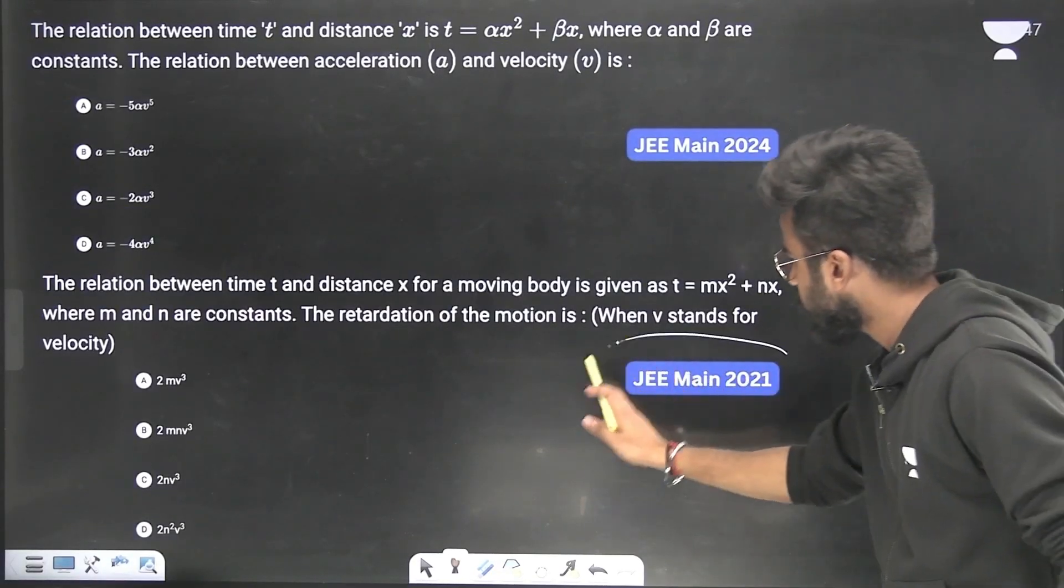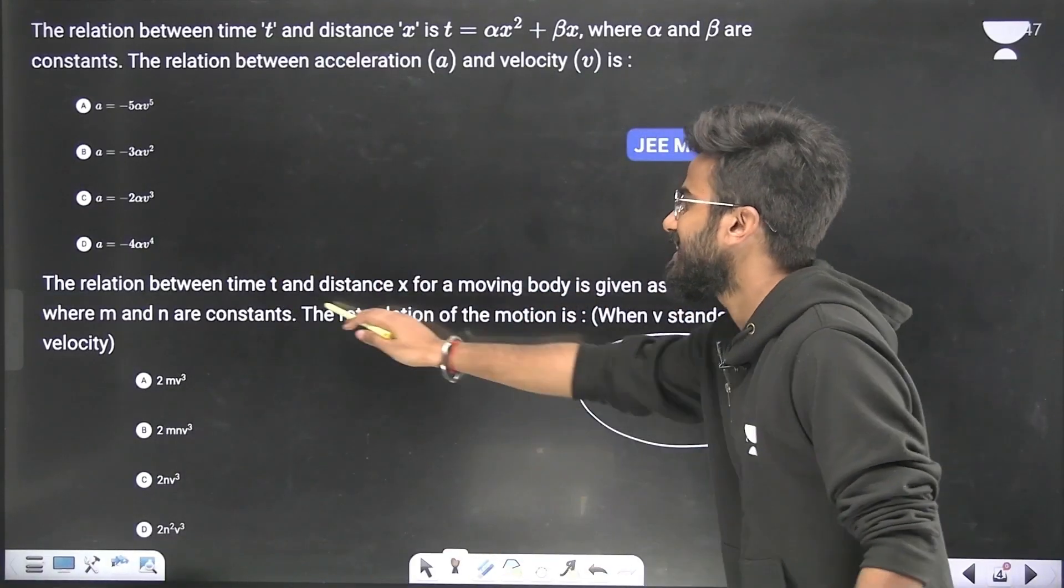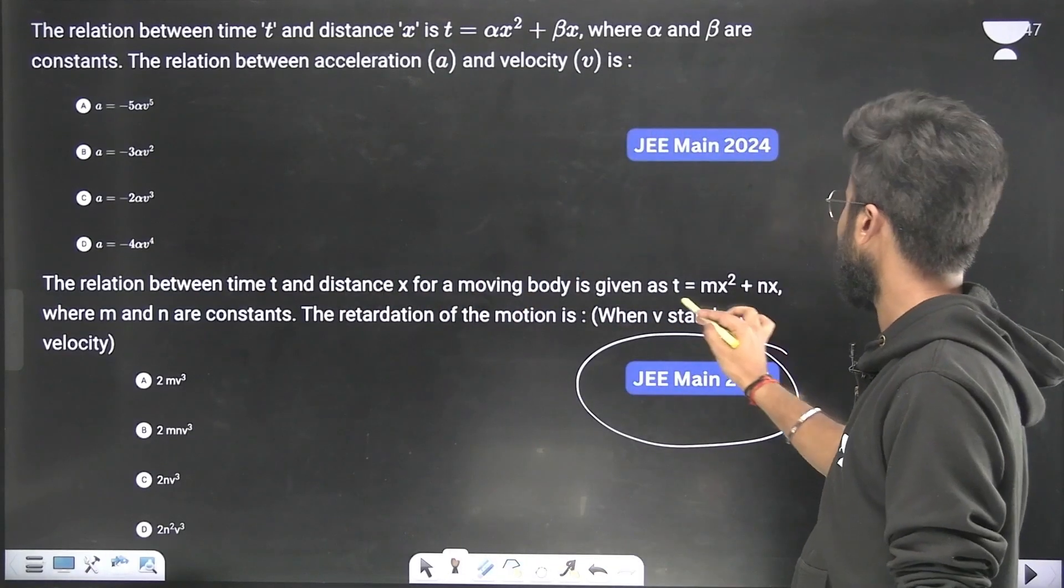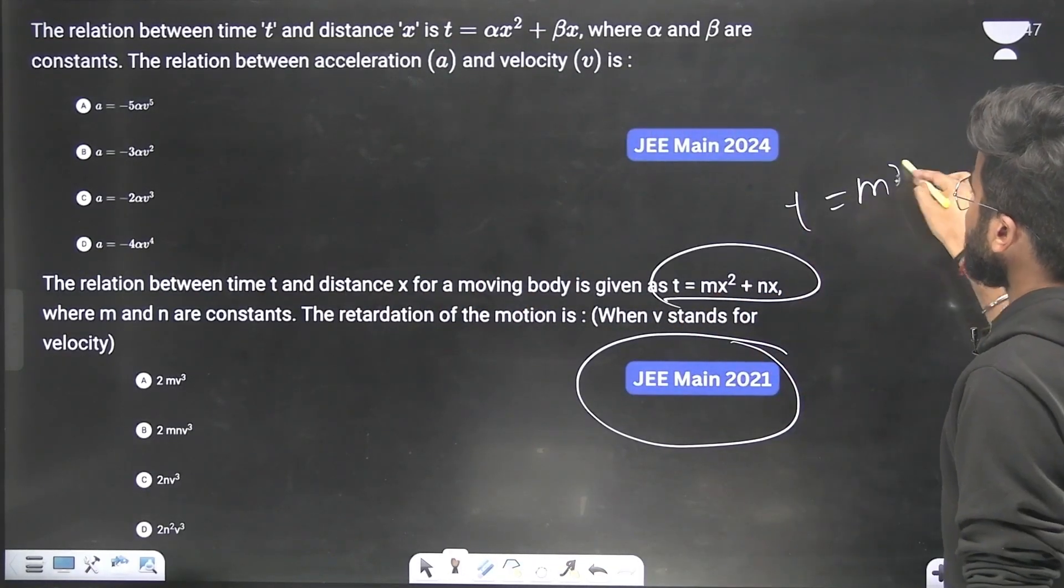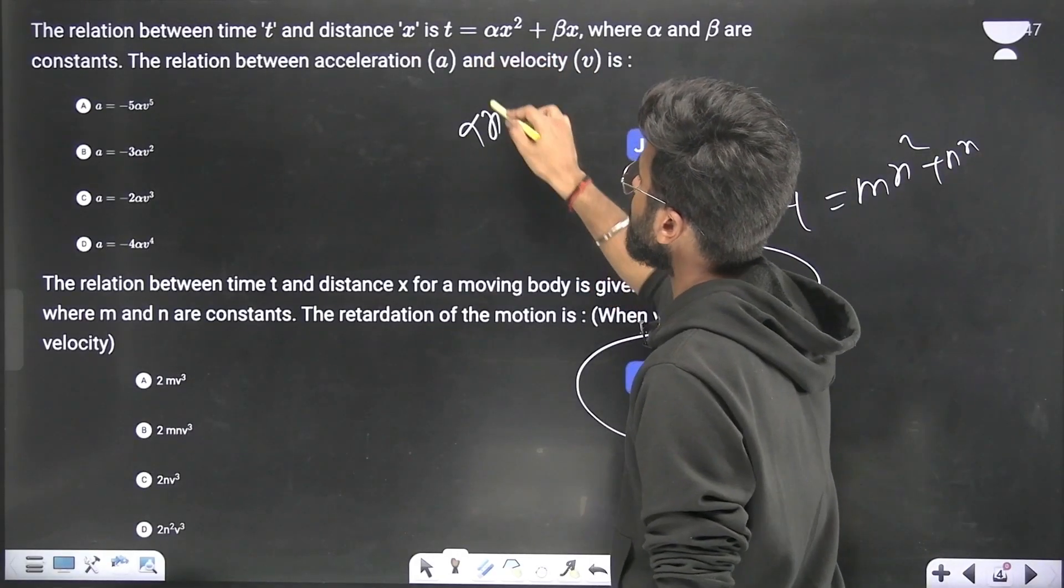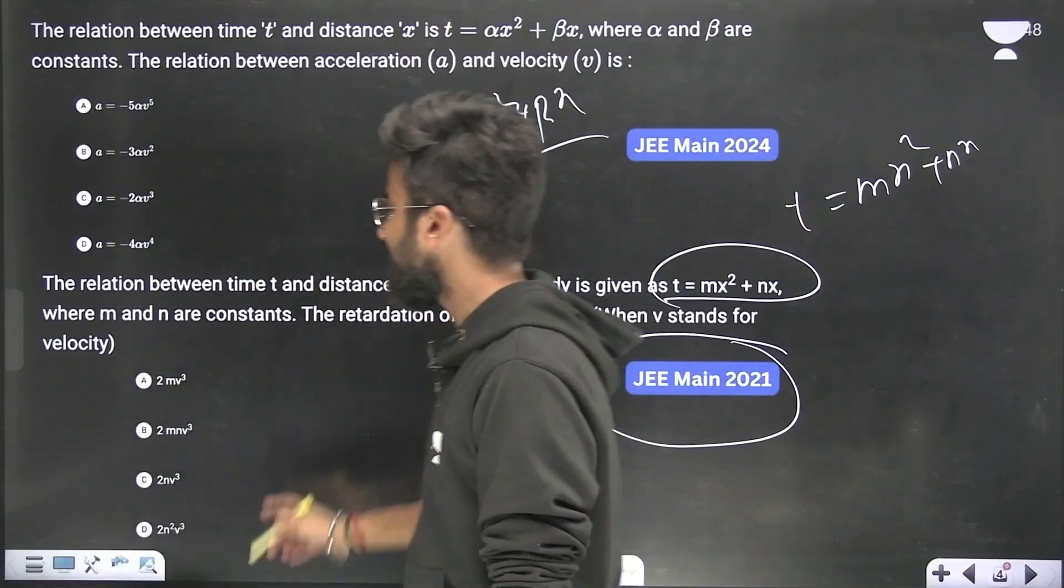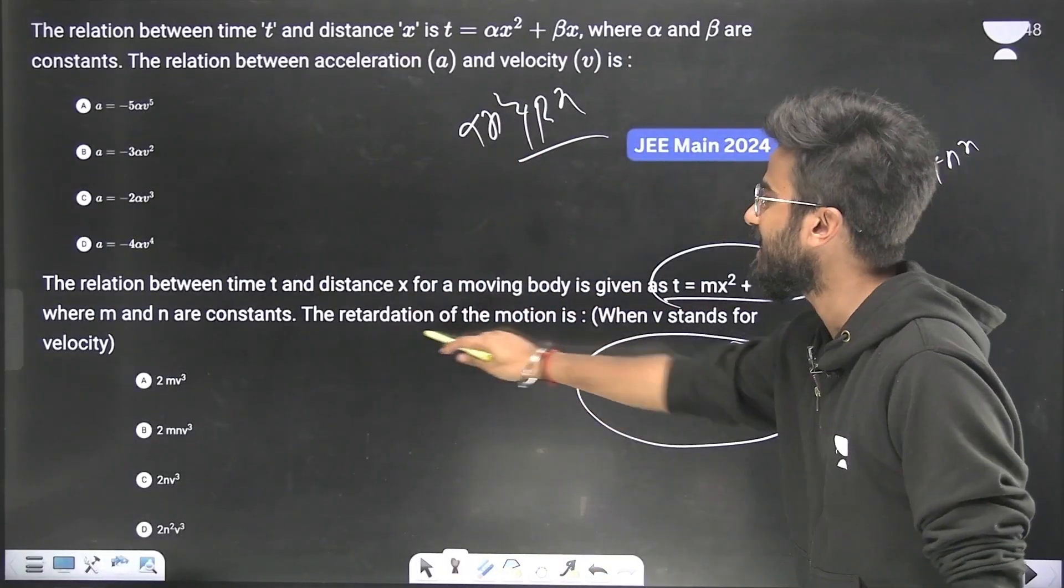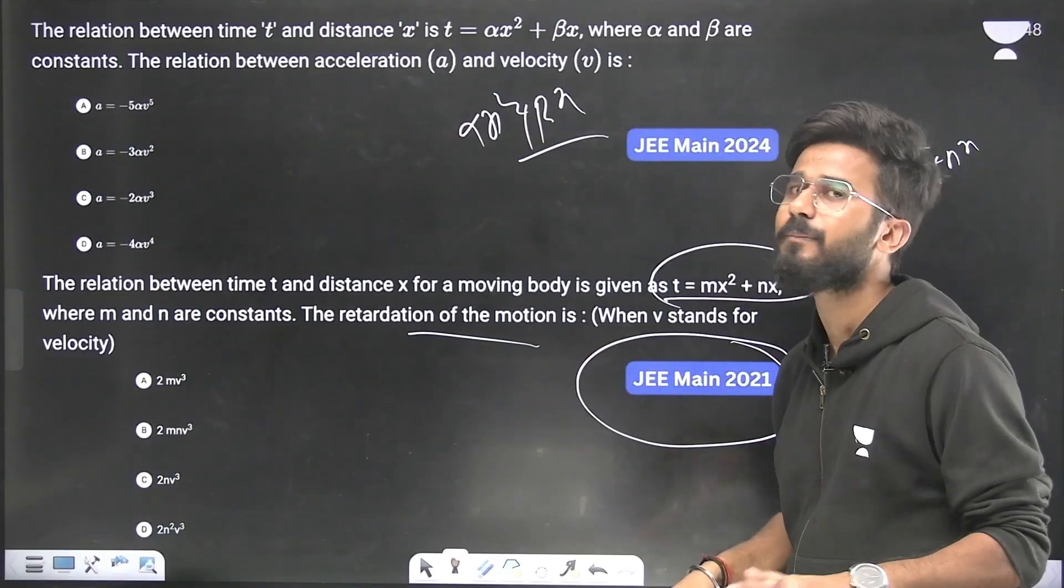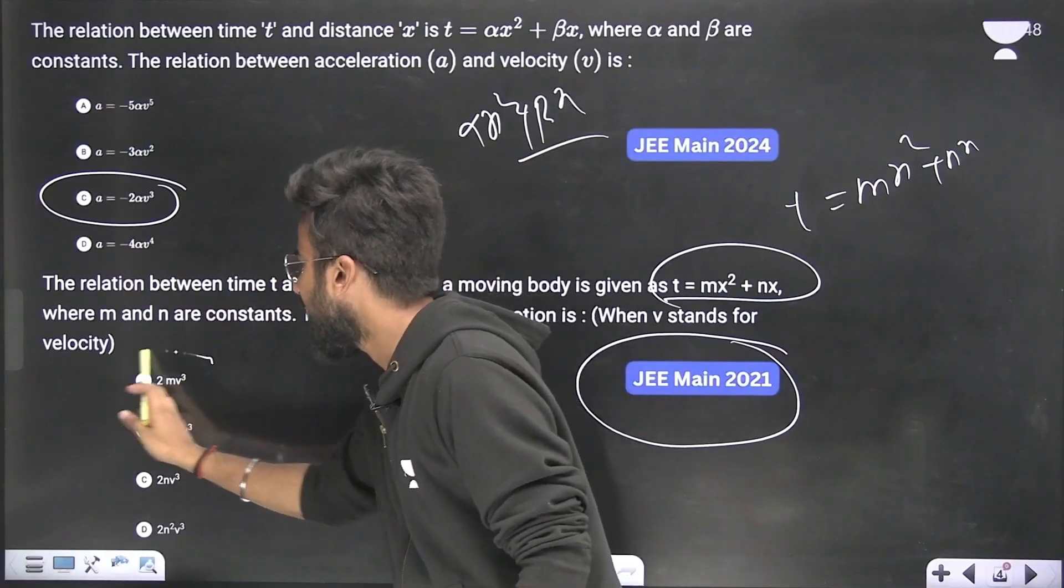And it simply says that the relation between time and distance x was given as t equals mx squared plus nx. In this question, it was given as alpha x squared plus beta x. So just look at this thing. And what it has asked, that you have to write the retardation of the motion. It says retardation, it means it has included the negative sign. So answer will be 2m v cubed.